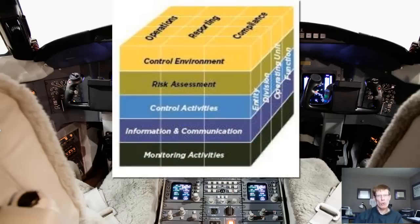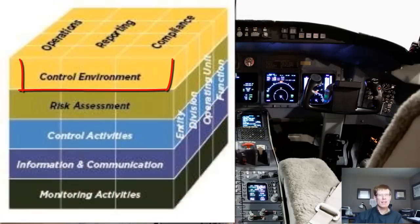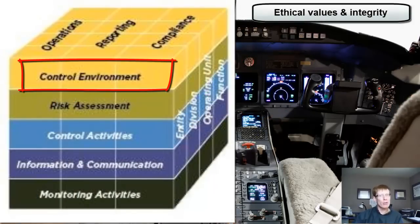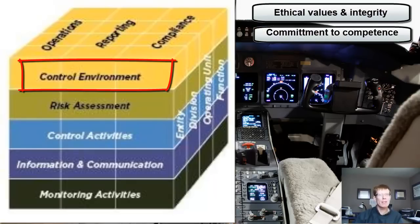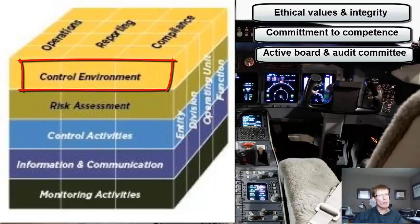The COSO framework of internal controls defines the entity's controls as those that are implemented for multiple transaction cycles or for the entire organization. The control environment consists of the active promotion of ethical values and integrity throughout the organization, a commitment to the establishment of competence, an active and qualified Board of Directors and Audit Committee. The Board of Directors should be independent of management and exist to challenge management and scrutinize management's effectiveness. The Audit Committee has oversight responsibility for financial reporting and acts as a conduit between management and the external auditor.